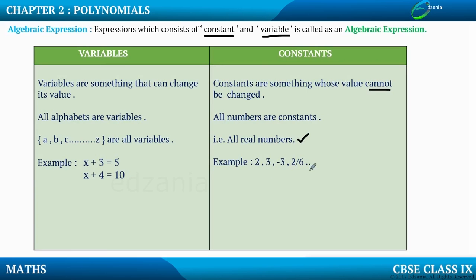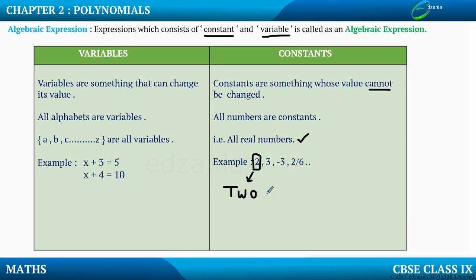There is an example of constant here. Look at the first example. What is this number called as? This number is called as 2. Can I call this number as 5? No. Can I call this number as 10? No. Can I call this number as 20? No. Because its value is fixed. This number has a fixed value and that value is 2.